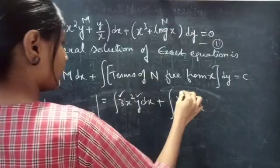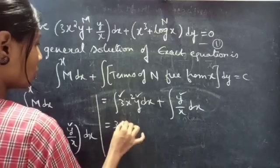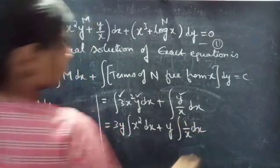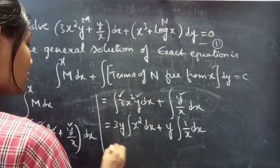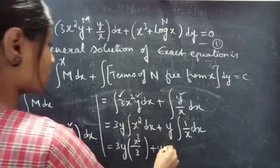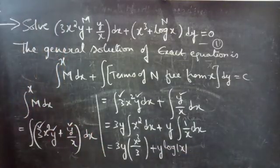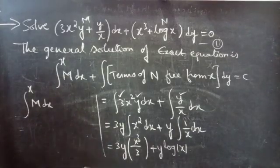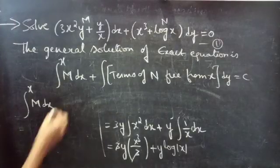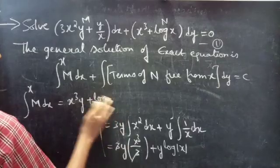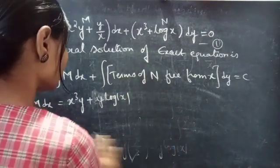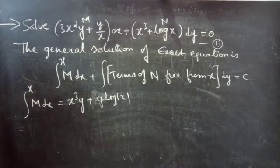3y and y are constants, so let's write the constants outside the integrals: 3y · ∫x² dx + y · ∫(1/x) dx. This equals 3y · (x³/3) + y · log|x|. The 3 cancels, giving us x³y + y log|x|.